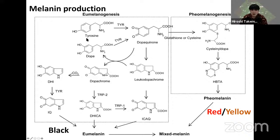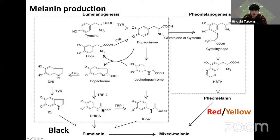This is a summary of melanin production. Melanin is produced from the amino acid tyrosine. Tyrosinase (TYR) catalyzes tyrosine to DOPA or dopaquinone. Dopaquinone is further oxidized to dopachrome. Tyrosinase again catalyzes to another type of compound, and TRP-1 and TRP-2 (tyrosinase-related proteins 1 and 2) also oxidize dopachrome, finally producing eumelanin — a black melanin. In contrast, dopaquinone conjugated with glutathione or cysteine produces pheomelanin, a red or yellow melanin.